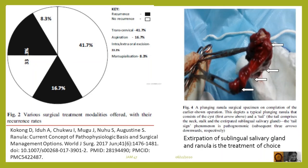The recurrence rates in various surgical treatments are: after marsupialization, around 8.3%; intra and extra oral excision, 33.3%; aspiration, 16.7%; and transcervical dissection, 41.7%.